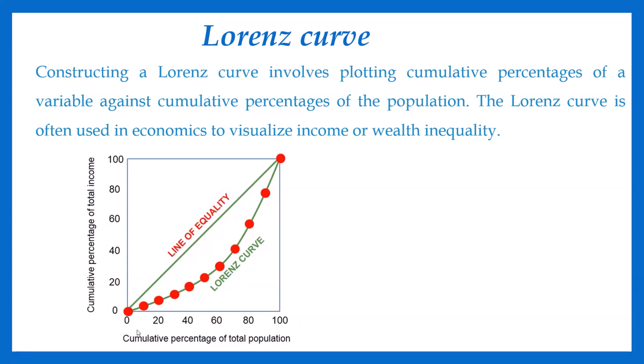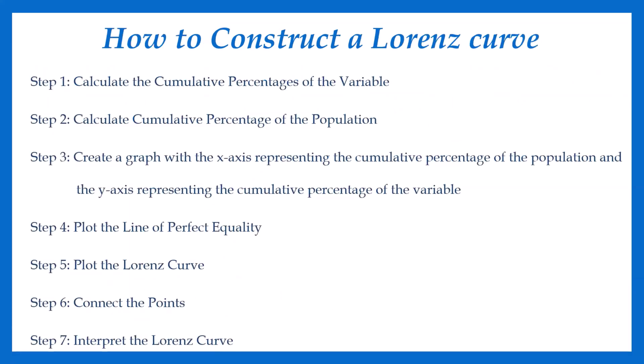Now we should get a clear idea of how to construct a Lorentz curve. What are the steps in constructing a Lorentz curve? The first step: calculate the cumulative percentages of the income. Second, calculate the cumulative percentages of the population. Third, create a graph. Fourth, plot the line of perfect equality. Next, plot the Lorentz curve and connect the points. Finally, you should interpret the Lorentz curve.